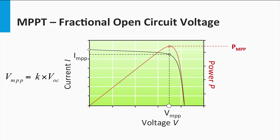How is this technique rationalized? We know that every illumination level and therefore irradiance level corresponds to a particular IV curve and therefore a specific level of open-circuit voltage. It is found from practice that for a range of IV curves, the ratio of MPP voltage to open-circuit voltage shows little variation. Thus, for changes in irradiance, if the open-circuit voltage can be measured, the MPP voltage can be easily estimated as a fraction of the open-circuit voltage.